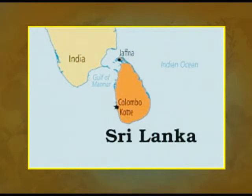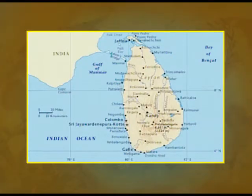Sri Lanka lies in the southernmost part of the South Asian subcontinent. It is an island nation surrounded by water bodies on all four sides. The water body that runs between India and Sri Lanka is the Gulf of Manar, and India is the nearest neighbor of Sri Lanka. Colombo is the capital city, and the strait between India and Sri Lanka is known as Palk Strait.